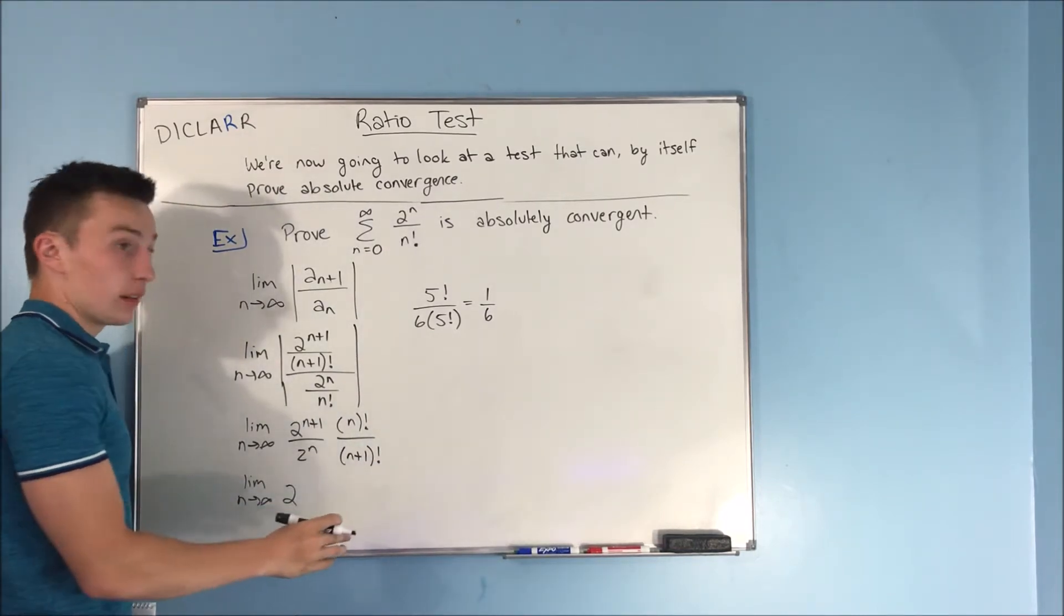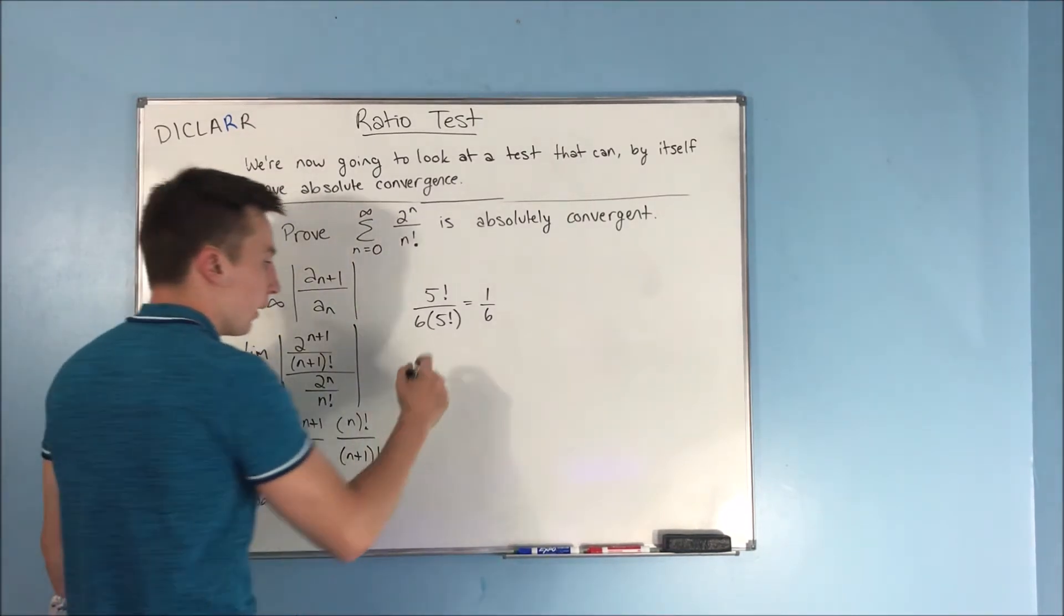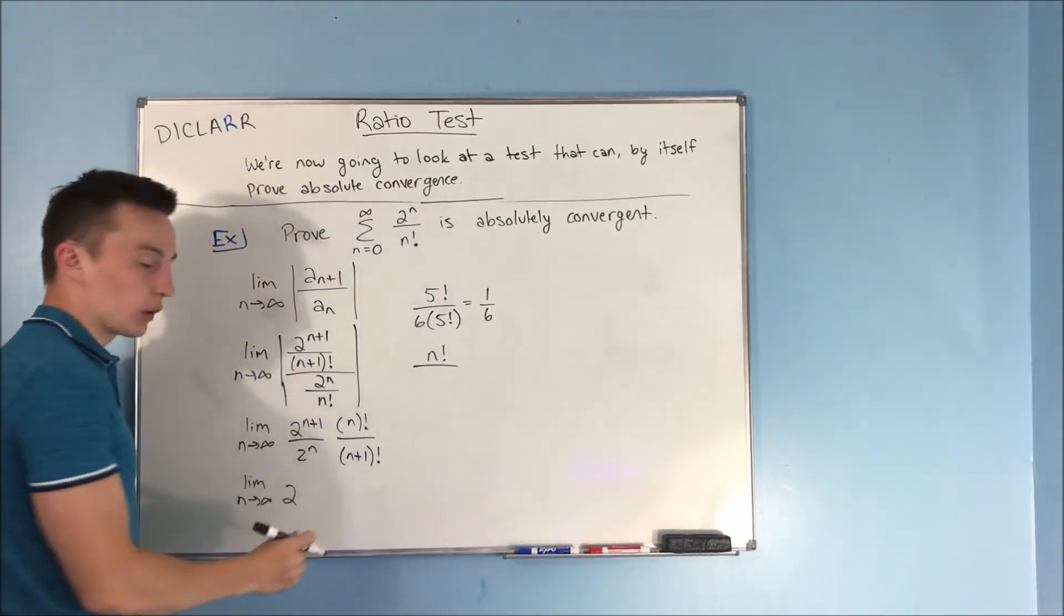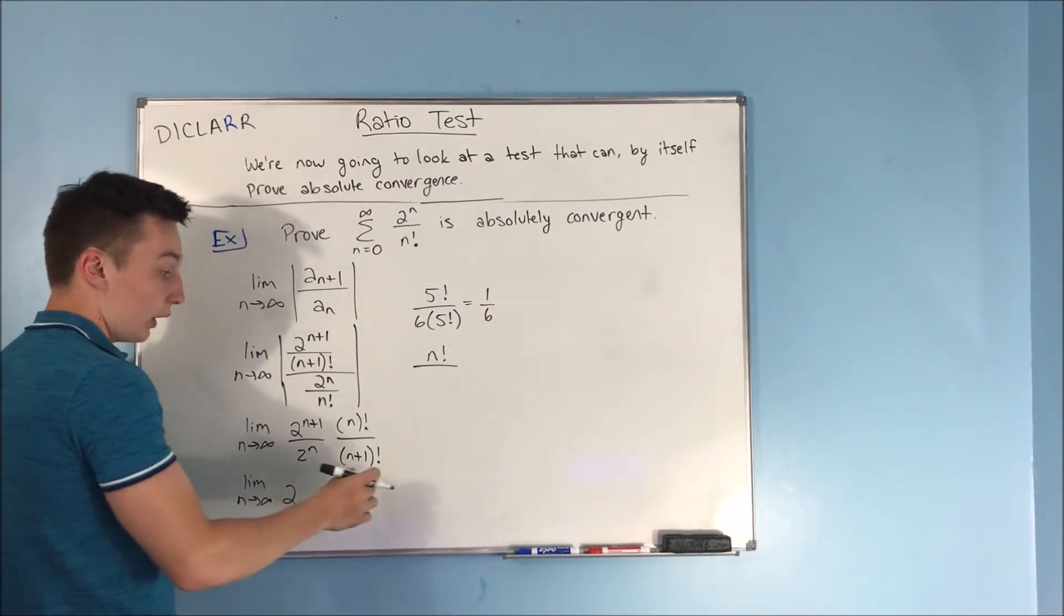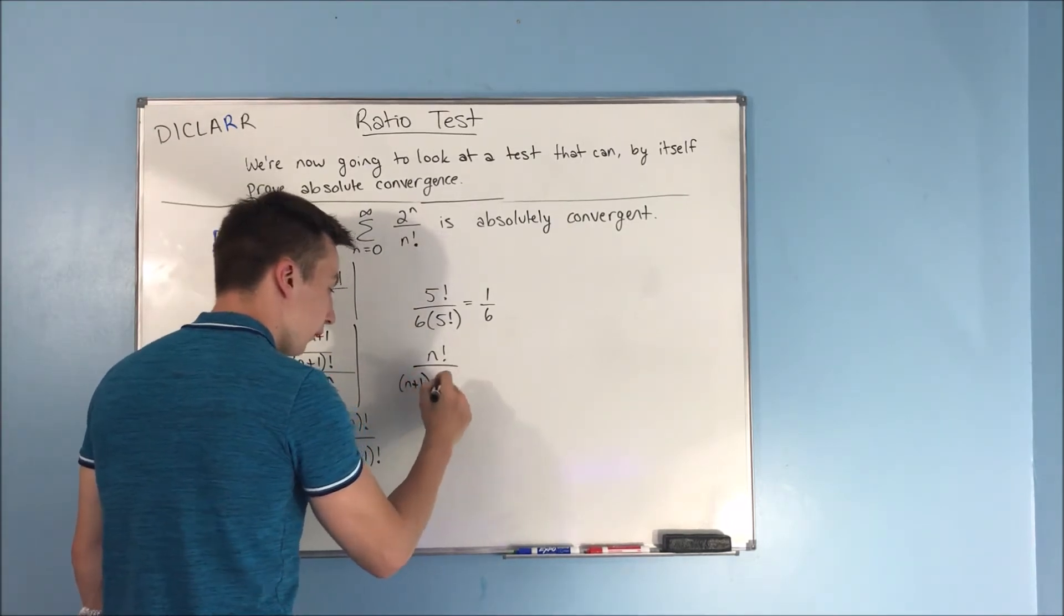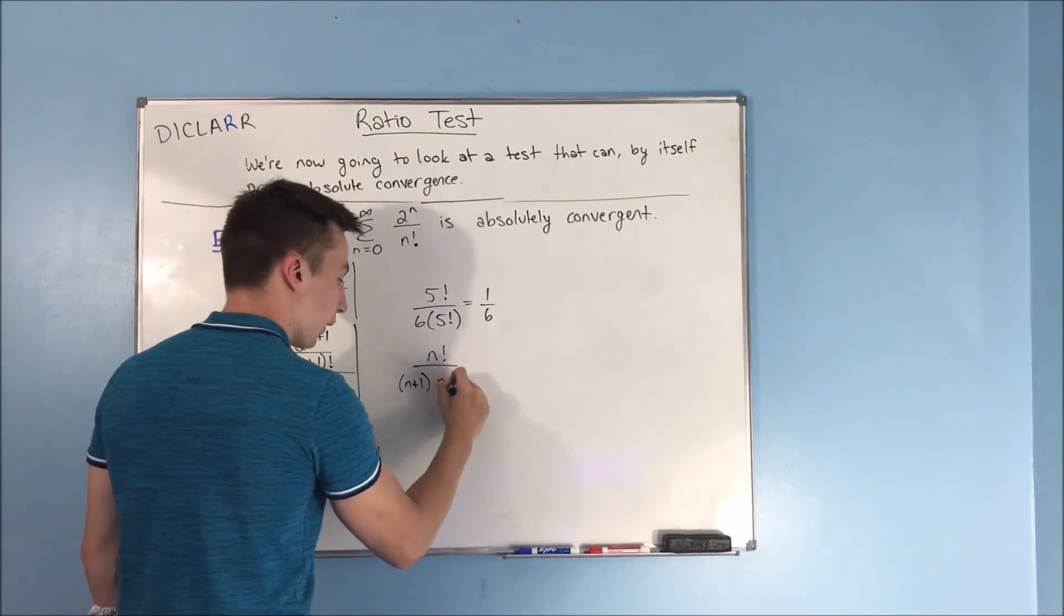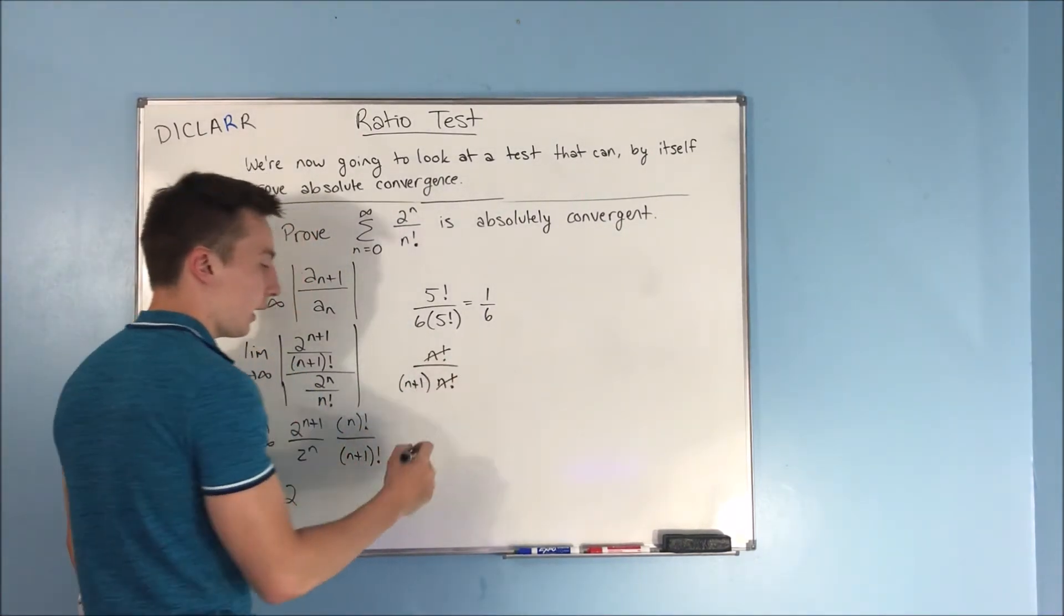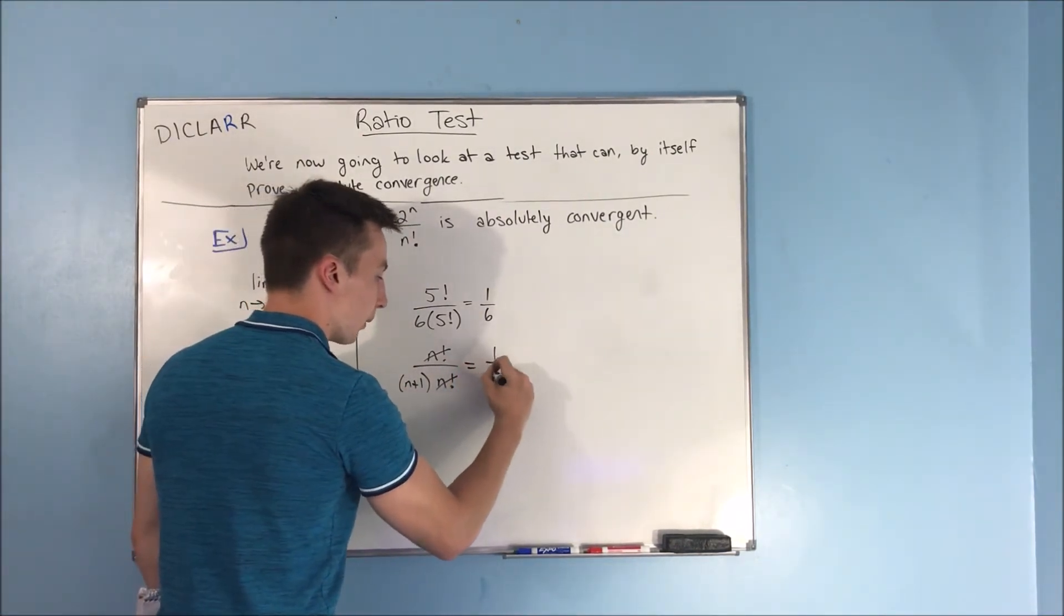So since we have n's, it's literally the same thing. We have n factorial over n plus one factorial, and really that's just the same thing as n plus one times n factorial. The n factorials cancel out, and you're just left with one over n plus one. So that's what you get in this limit.